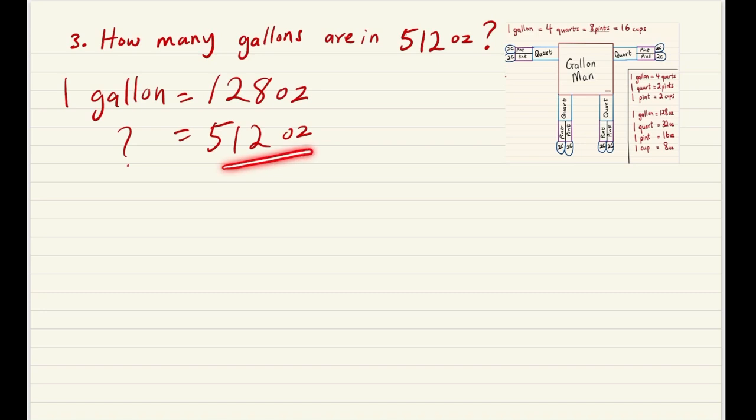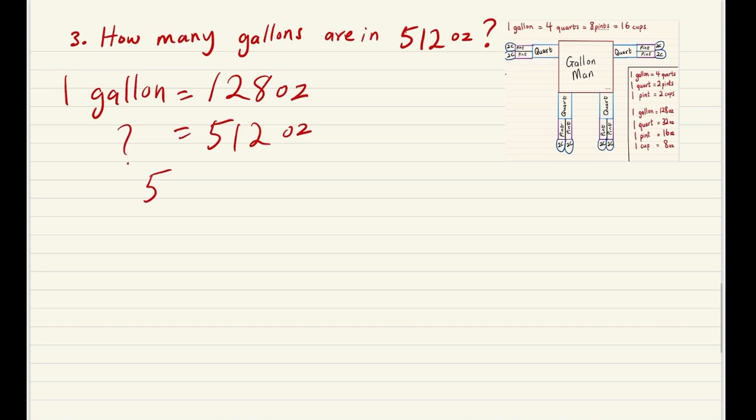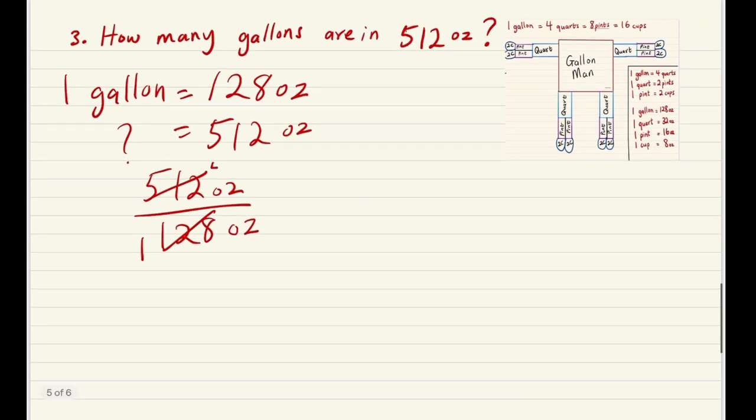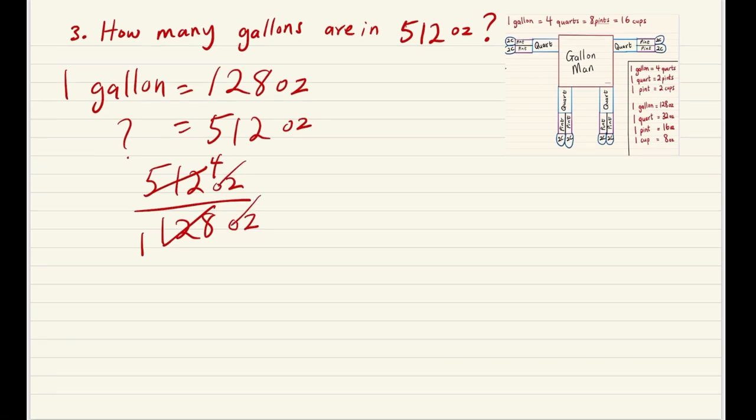It's going to be 512 ounces divided by 128 ounces. 128 goes into itself once and it goes into 512 four times. You can always use your calculator. Remember that on the exam you would have access to a basic calculator. Therefore we know that there are 4 gallons in 512 ounces.